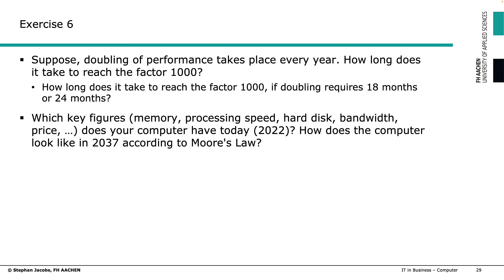As a quick exercise: suppose doubling of performance takes place every year. How long does it take to reach a factor of 1000? And how long if doubling takes 18 months, or 24 months? Now have a look at your computer's key figures — memory, processing speed, hard disk, bandwidth, price — and think about how your computer will look in 2037 according to Moore's Law, and what you will do with those key figures.